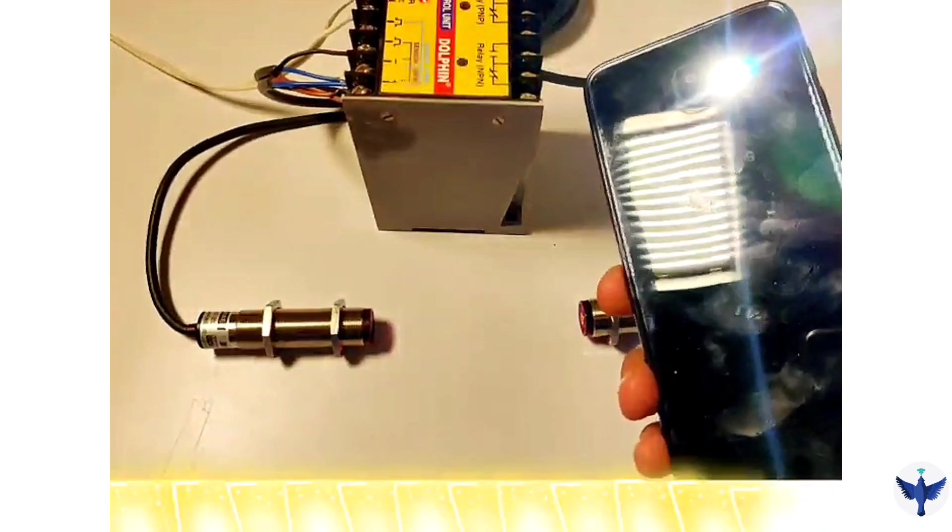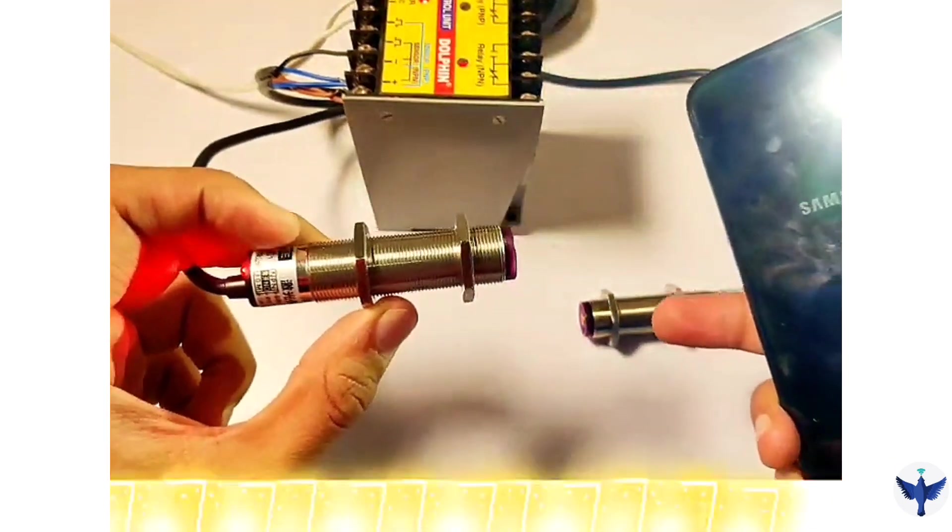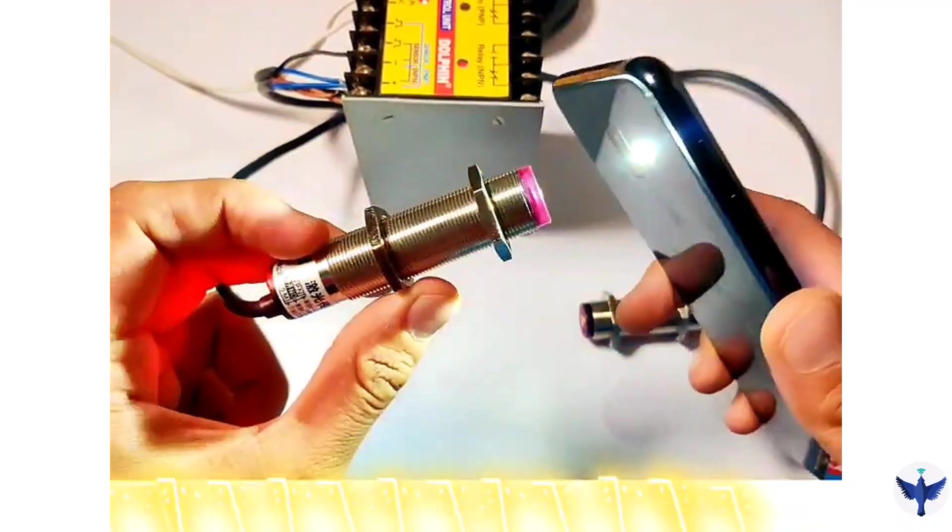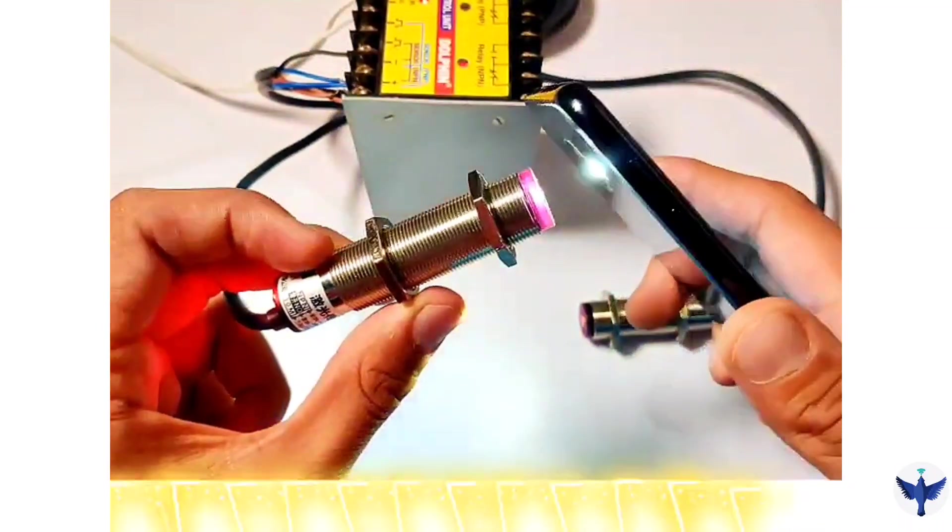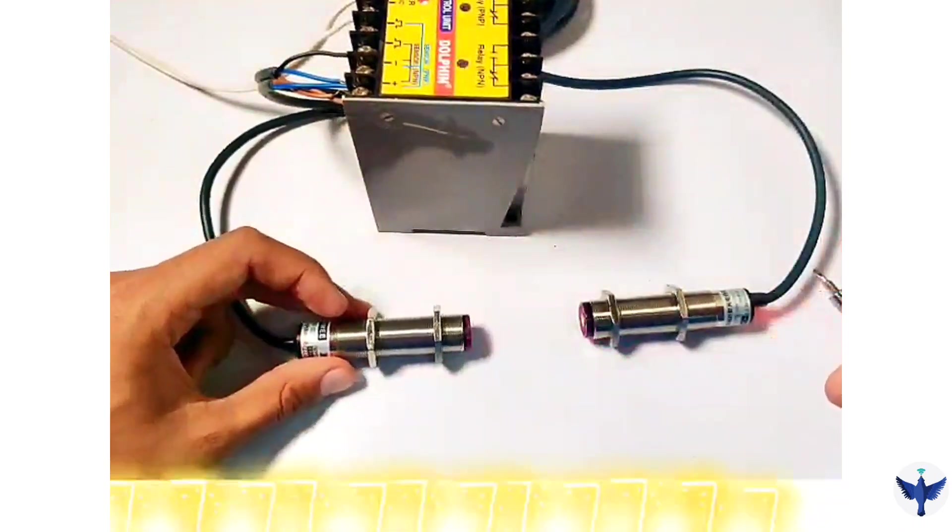So now when I use the external light, you can see here is the external light and when I point it, you can see the output is turned on when the red light is not falling on it. So the output won't change when I use external light on it. It would only change when the red laser light falls on it.